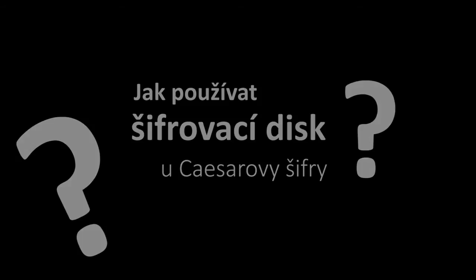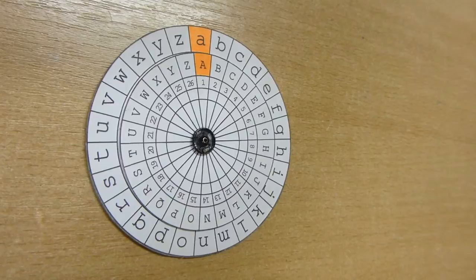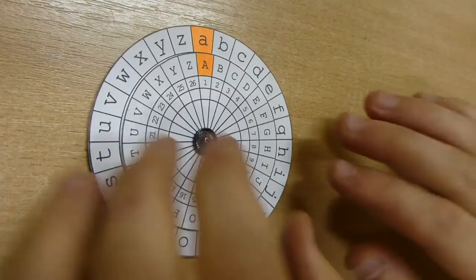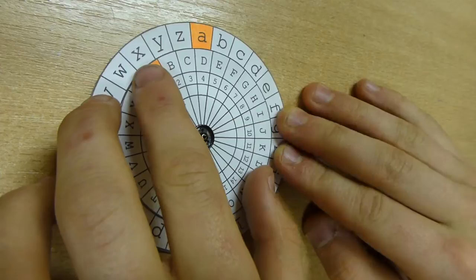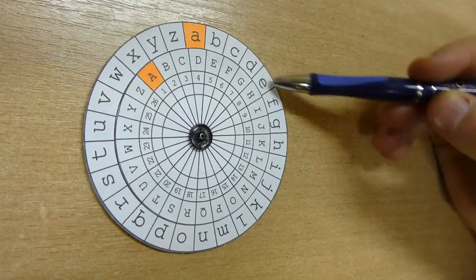Když nám tedy u Cézarovy šifry stačí jen jedna abeceda, není problém si ji vytvořit. Učeníme tak po otočením šifrovacího disku o určitý počet znaků. Konkrétně Cézar používal posun o tři znaky. Takže místo A psal D, místo B psal E a tak podobně až do konce abecedy.